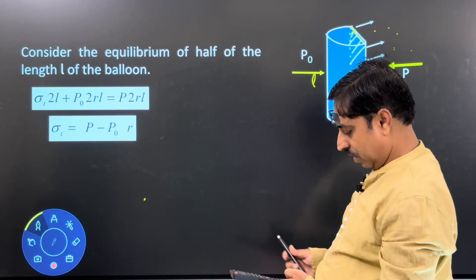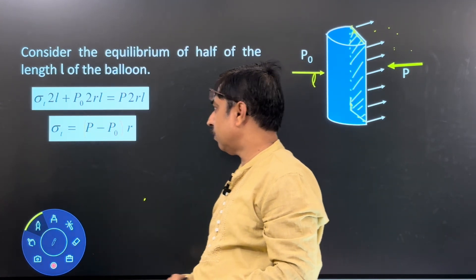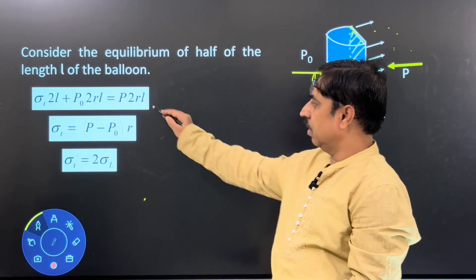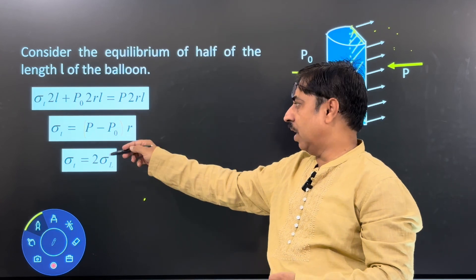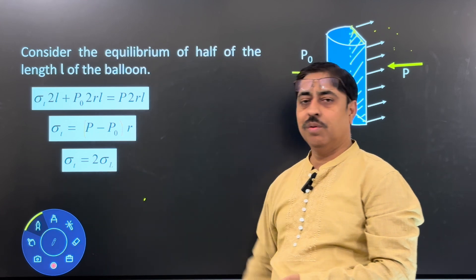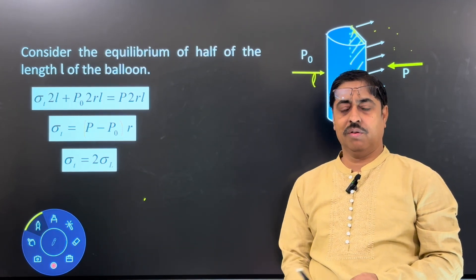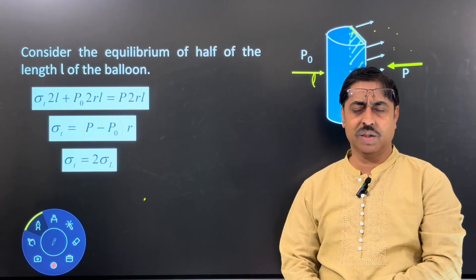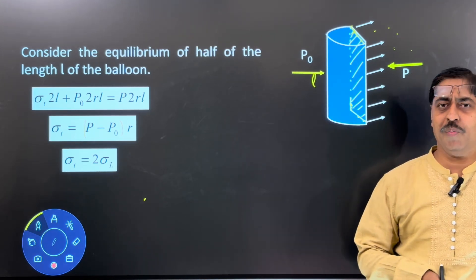Taking the ratio of the two equations gives that σ_T is twice σ_L. This is the first equation we derived for longitudinal surface tension, and the second for transverse surface tension — their ratio shows transverse surface tension is twice the longitudinal surface tension. I hope you liked the video. See you in the next video with some other concept. Goodbye.